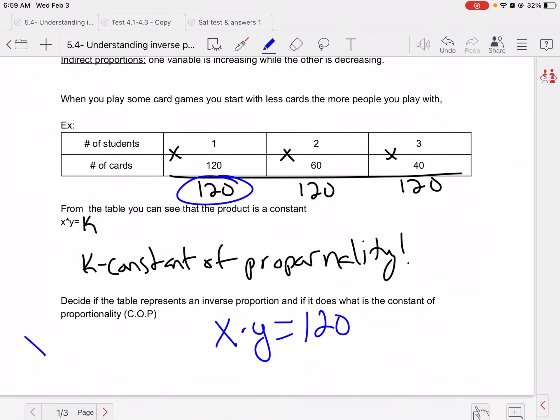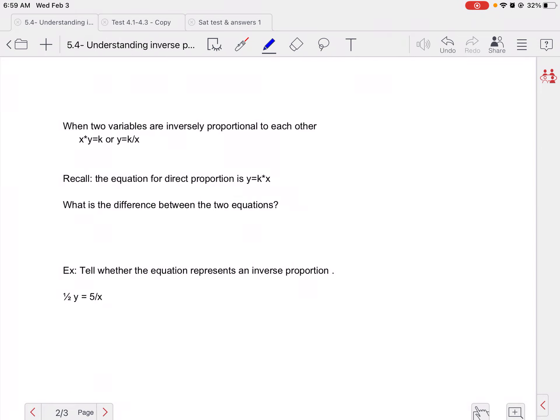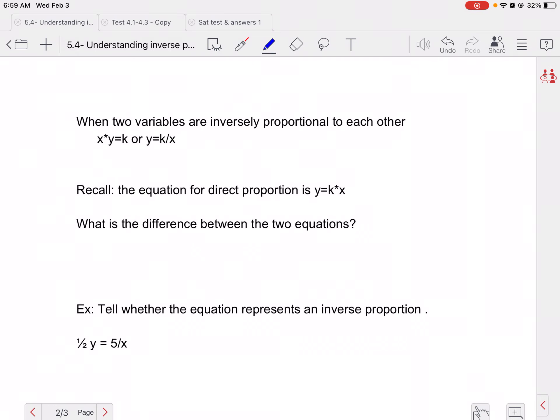So a little different equation than the direct proportion. So remember, direct proportion is y equals k times x, or y over x equals k. So instead of dividing y and x, we're multiplying y and x. And again, we kind of just wrote this. This is the formula for inverse proportion. This one is for direct proportion.